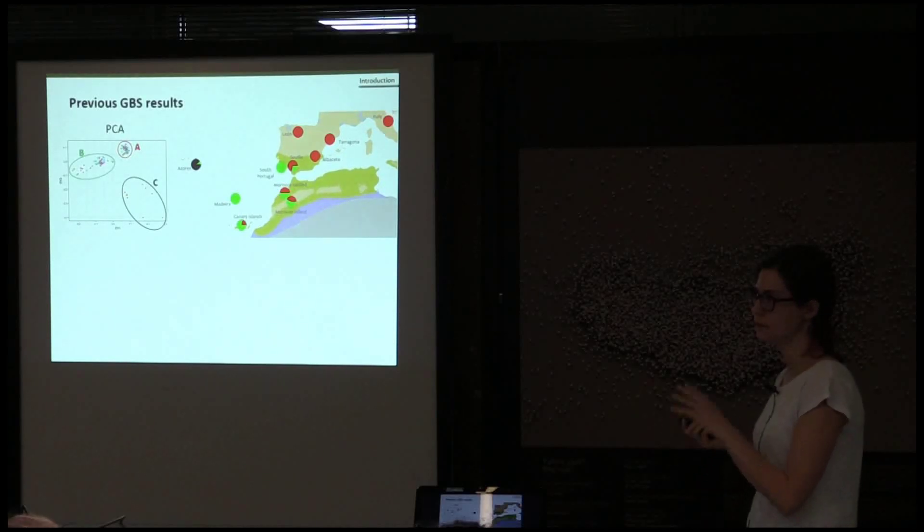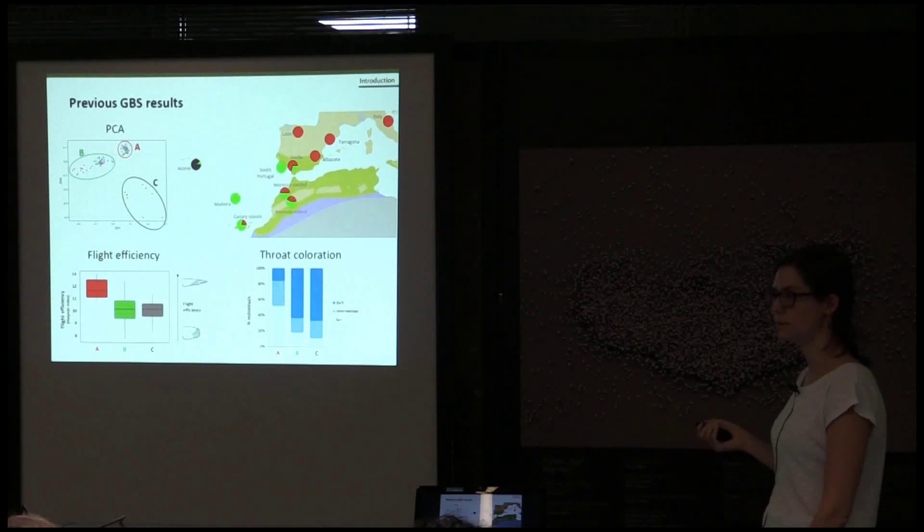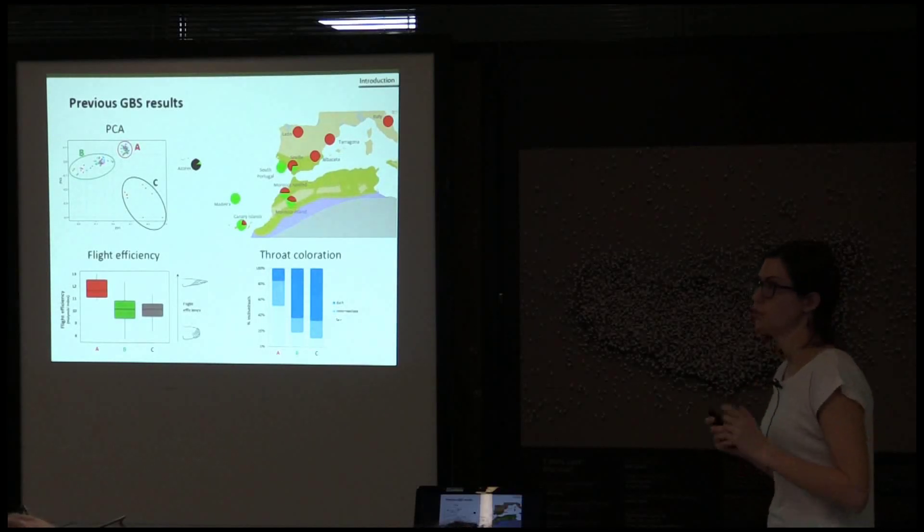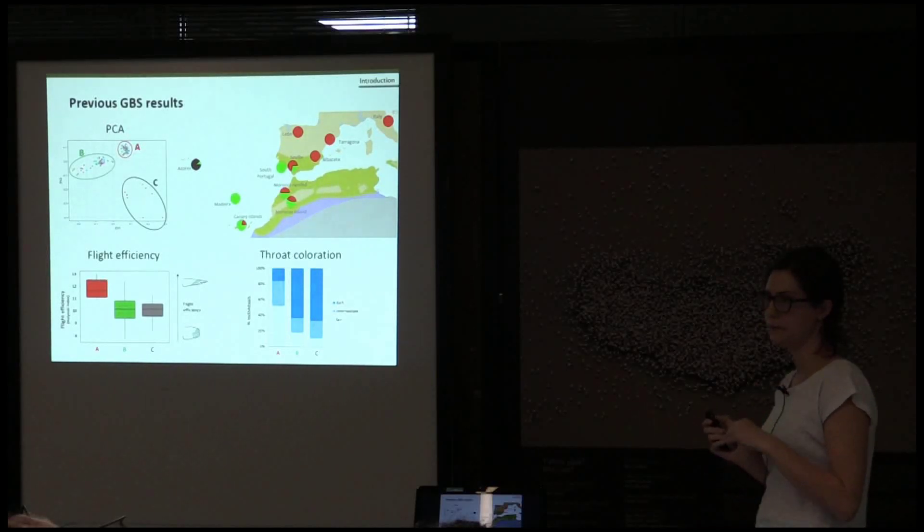After that, we related this cluster with the phenotypic traits. In relation to the wing shape, we can see that this cluster A has a more pointed wing that should confer them higher migratory potential, while in the other two clusters, wings are more rounded. In relation to the throat coloration, we can see that in cluster A, most samples are fair, while in the other two, most are dark.